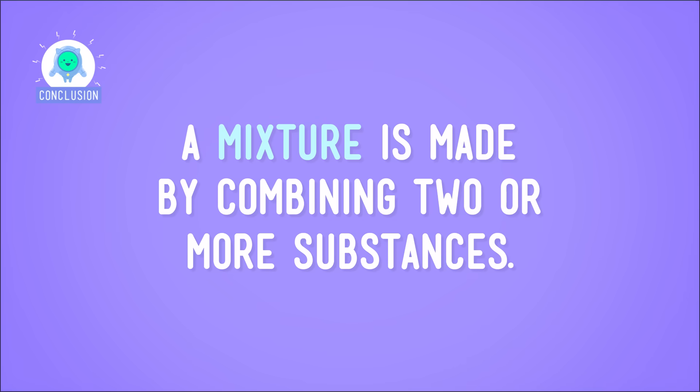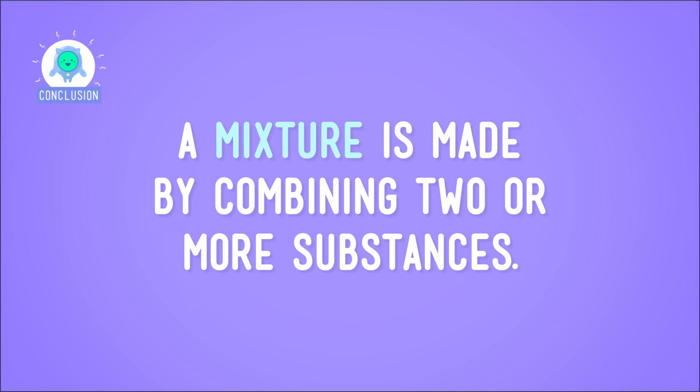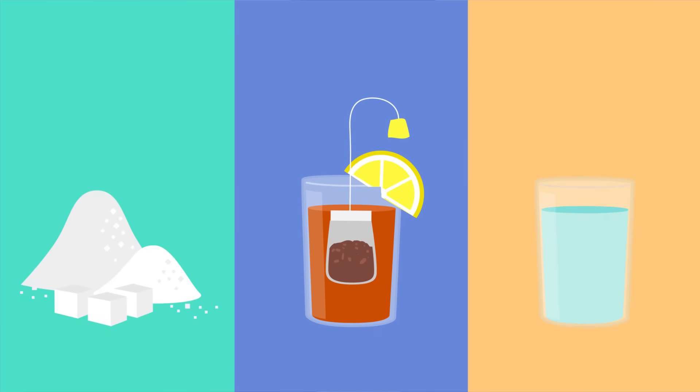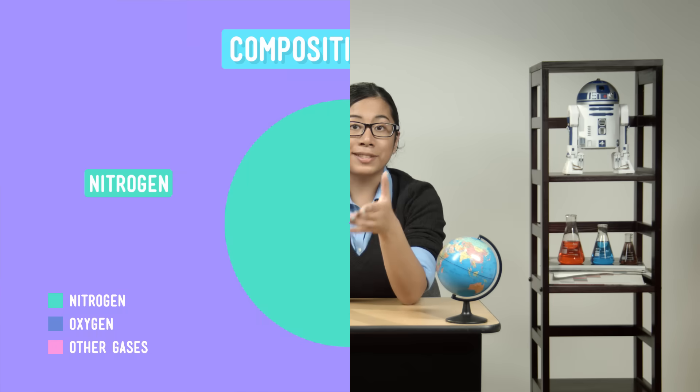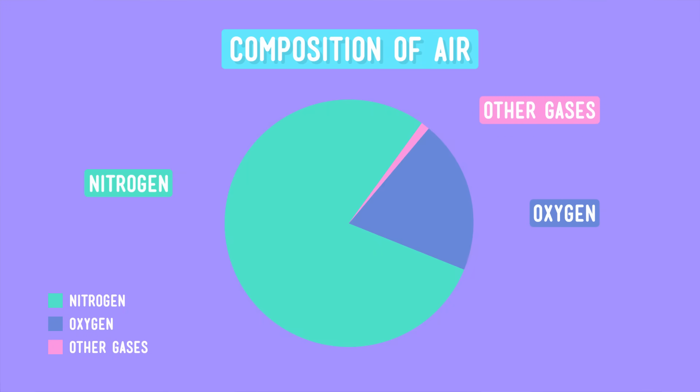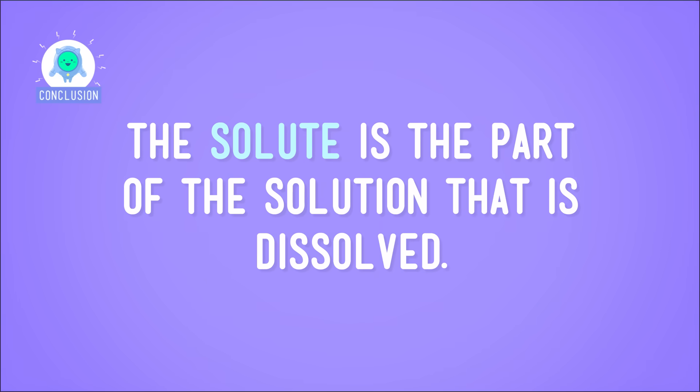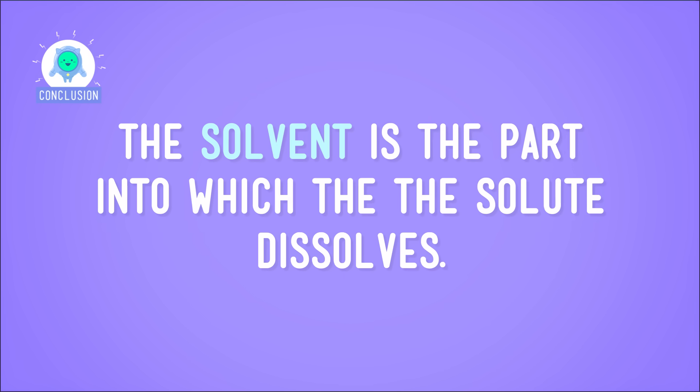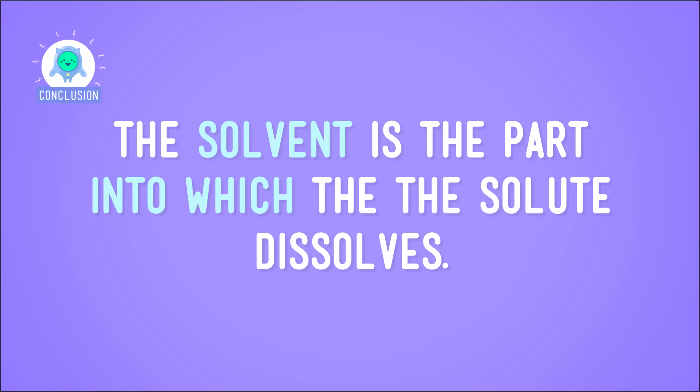So let's go over what we learned at our little mixed-up picnic. A mixture is made by combining two or more substances. When the particles that make up the substances are equally distributed, the mixture is called a solution. Solutions can be made of substances that are in the same state of matter, like gases in the air, or in different states of matter, like the gas bubbles in soda. The solute is the part of the solution that is dissolved, and the solvent is the part into which the solute dissolves. Solutions and some other kinds of mixtures don't always make new substances, even though it might look that way. Now let's enjoy what's left of our picnic, before the ants carry it all away!